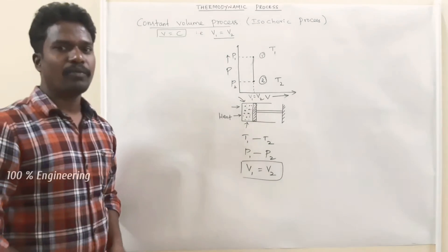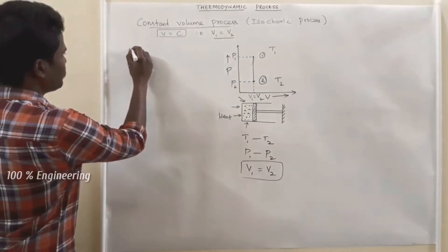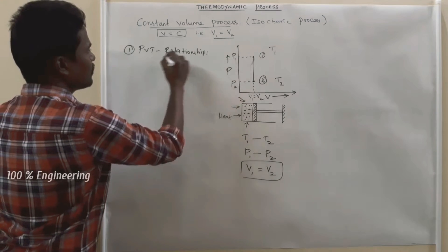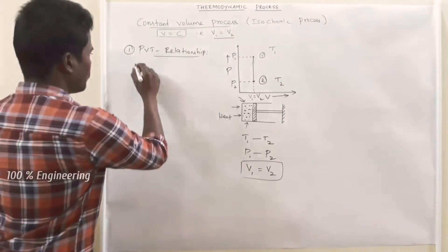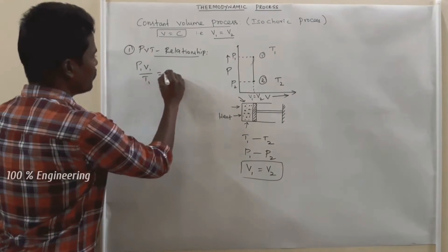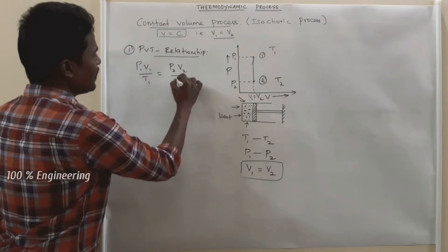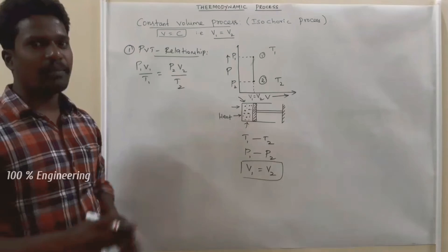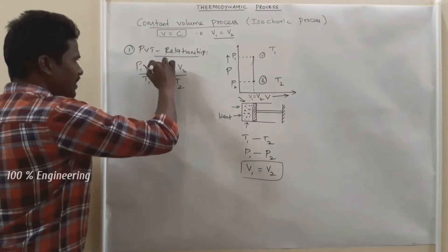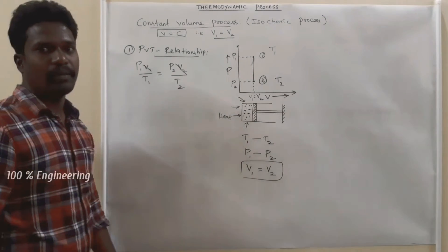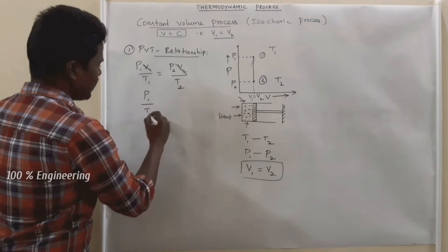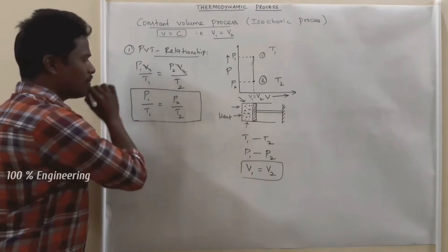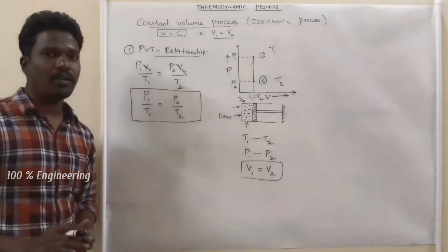Now we are going to look at the PVT relationship — the relationship between pressure, volume, and temperature. We know the general gas equation: P1 V1 by T1 equal to P2 V2 by T2. In this process, V1 and V2 are equal because it is a constant volume process, so we can cancel V1 and V2. Then we get P1 by T1 equal to P2 by T2. This is the relationship between pressure and temperature for a constant volume process.